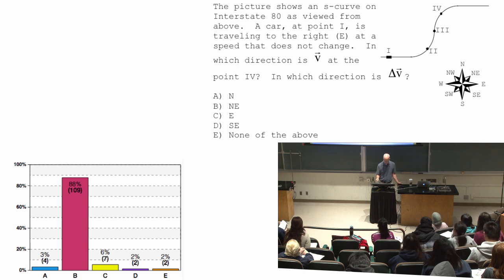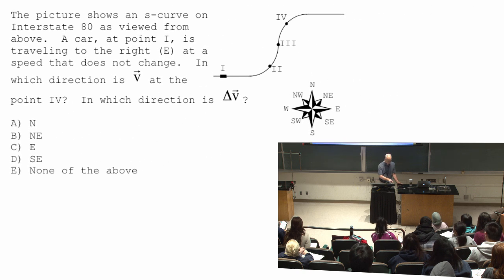Okay, now for the hard one. Oops, back again. What's the direction of the change in velocity at point four? How is the velocity changing exactly at point four?